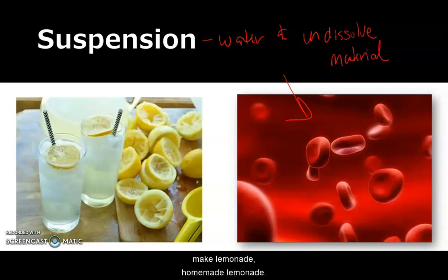Same thing with when you make lemonade, homemade lemonade. You might have pulp, right? There's little bits of pulp, and you can see the chunks in the pieces. That would be considered a suspension. So let's see if we can practice a couple of examples of identifying suspensions versus solutions.